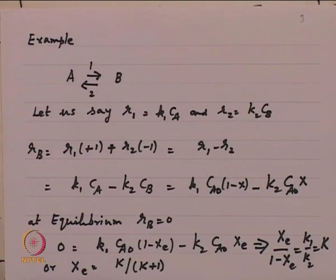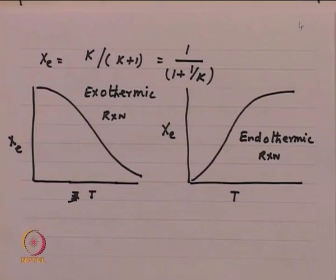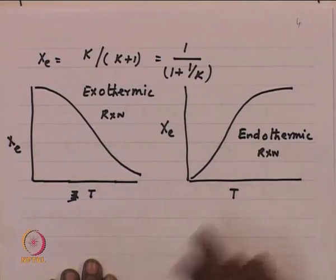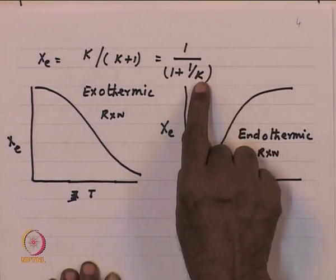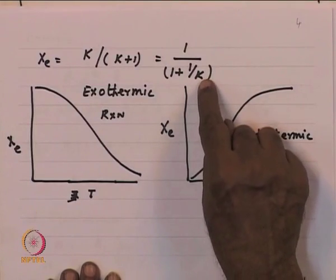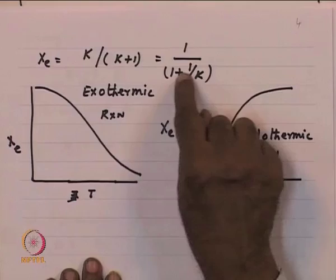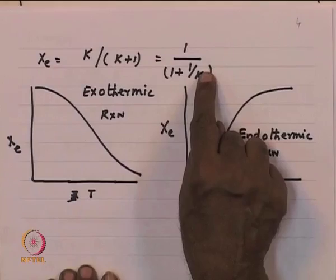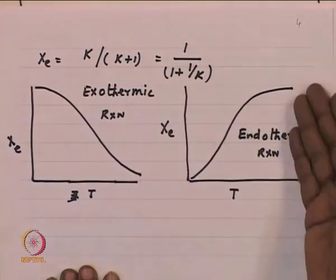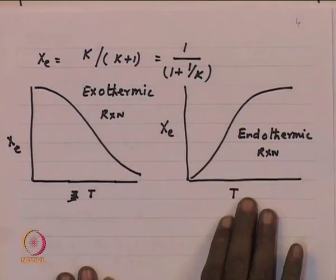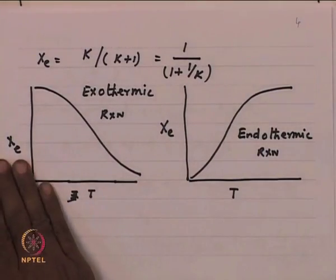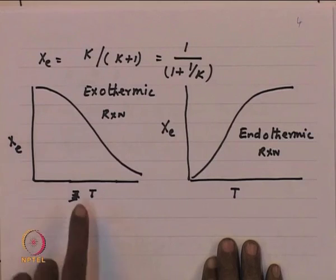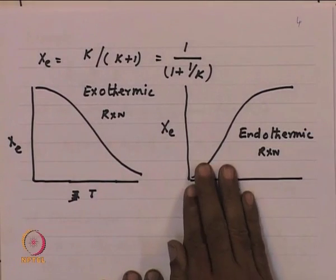If you make a plot of equilibrium conversion versus temperature, for the endothermic case, as K increases, the denominator decreases, so X keeps on increasing with temperature. For the exothermic case, X keeps on decreasing with temperature. So the equilibrium conversion keeps decreasing for exothermic and keeps increasing for endothermic reactions.